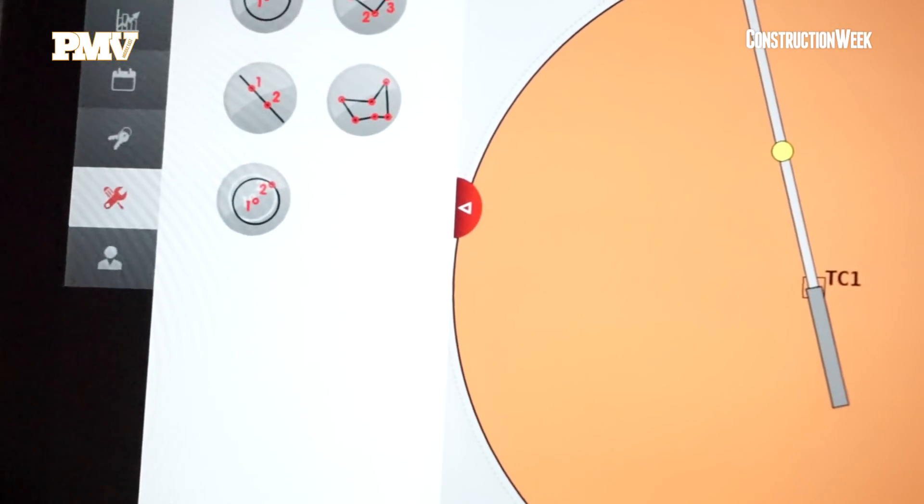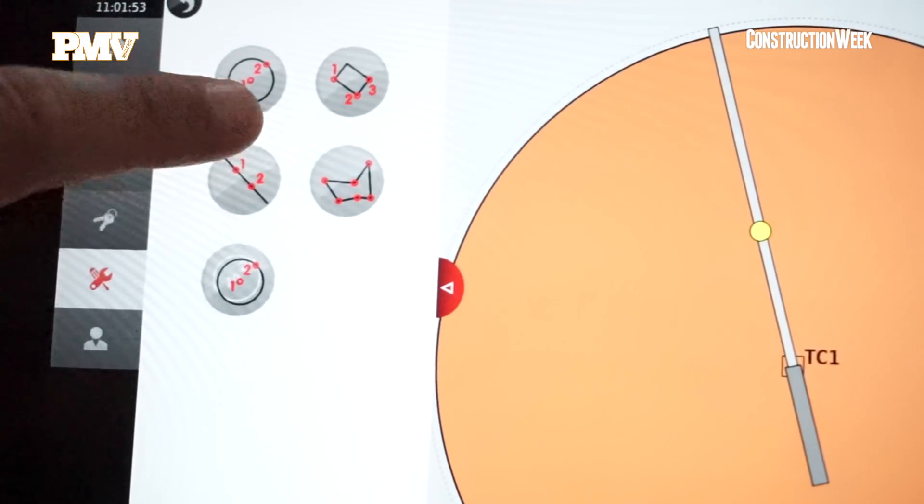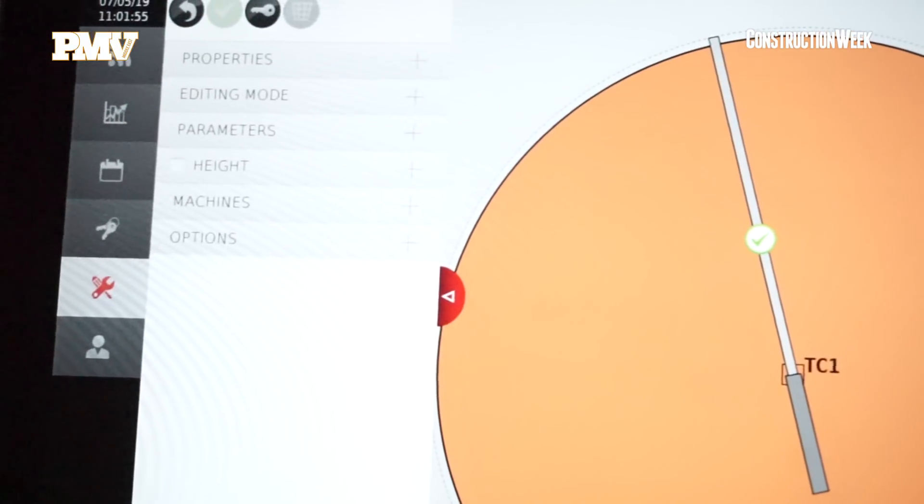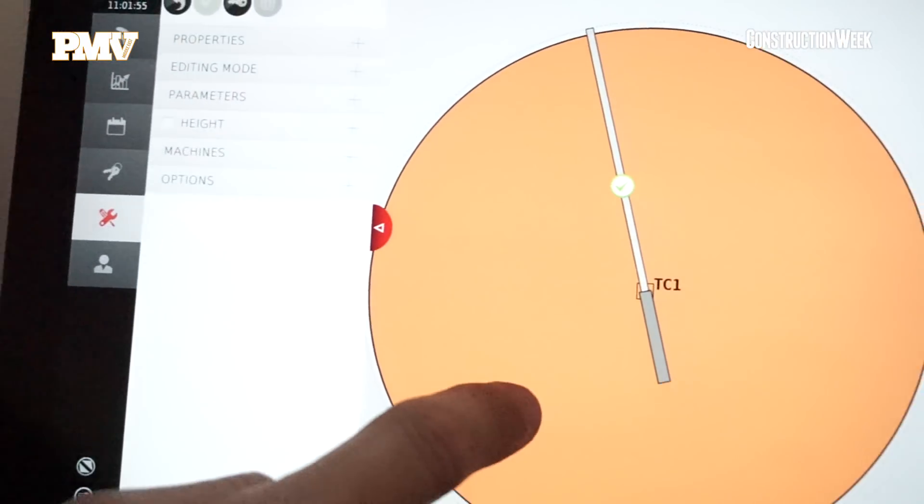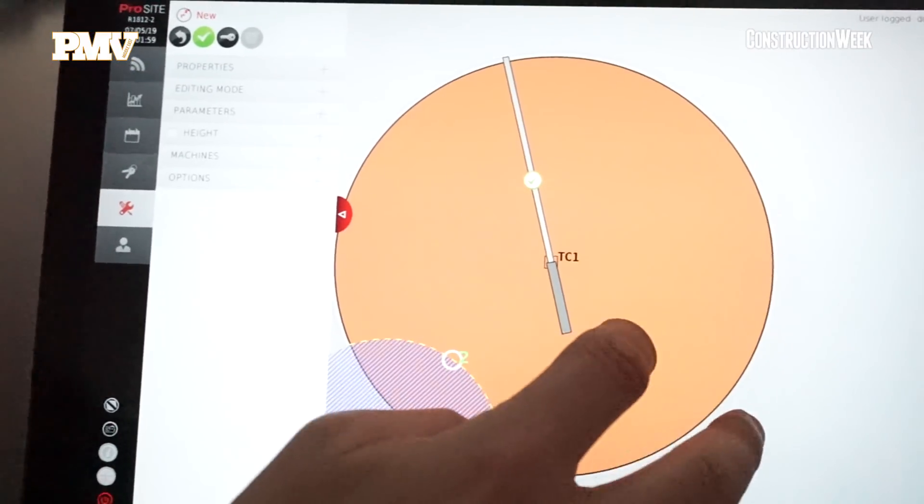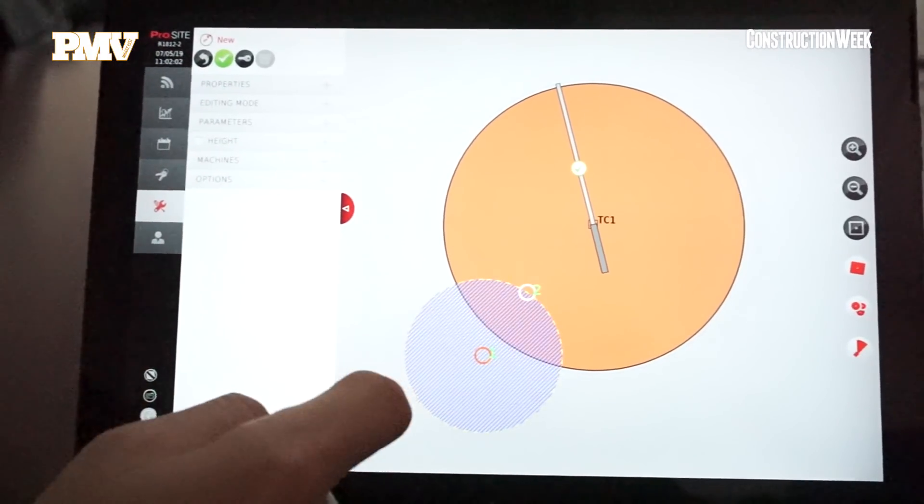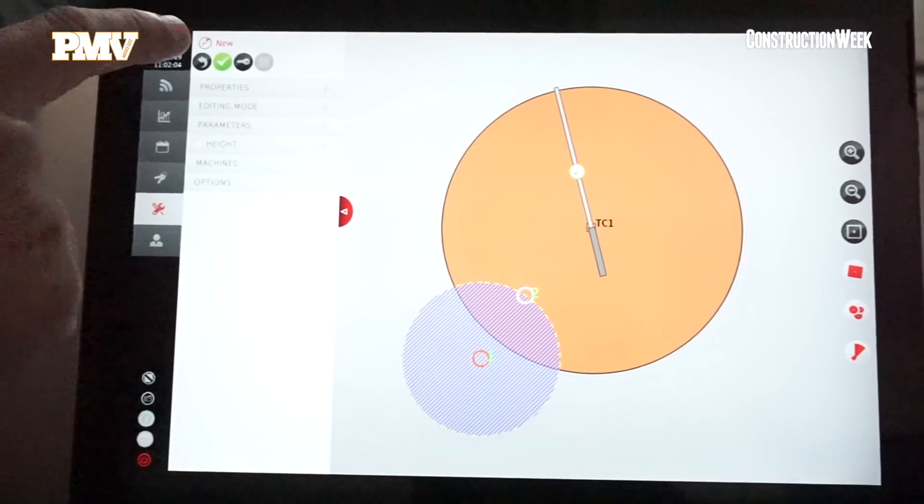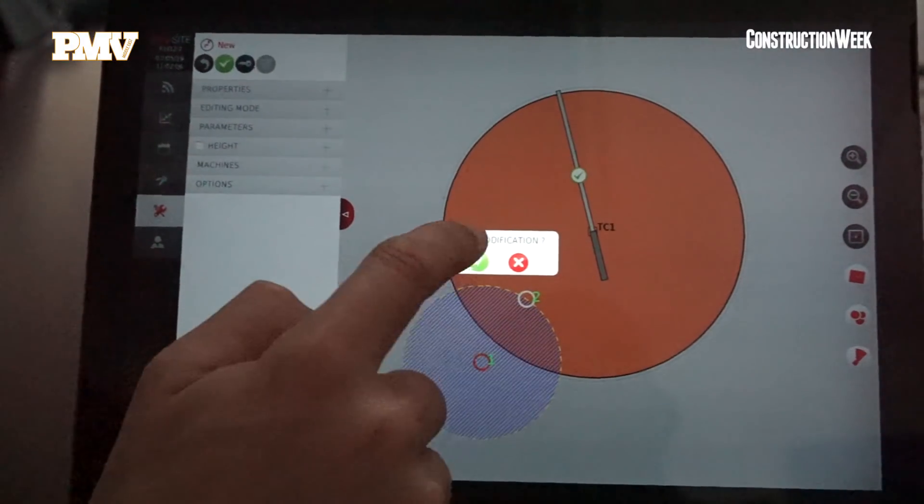I'm going to create a new zone and I'm going to select the circle to be able to create an area where we want to protect to pretend that the mobile crane is there. I'm just going to save the modification.